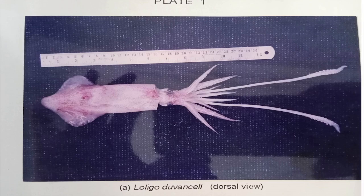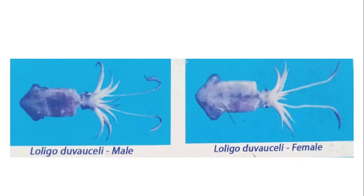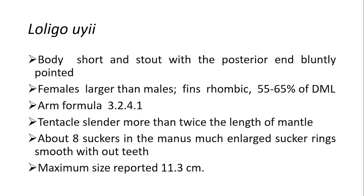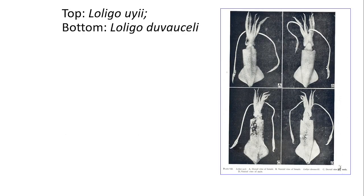These are the photographic images of Loligo duvauceli showing male and female distinction. The body is very short and stout, with the posterior end bluntly pointed. Females are larger than males. The fins are rhomboidal, 50 to 65 percent of dorsal mantle length. Arm formula is 3-2-4-1. Tentacles are slender, more than twice the mantle length. About eight suckers in the manus are enlarged; the rings are smooth or without teeth. The maximum size reported is 13.3 centimeters.